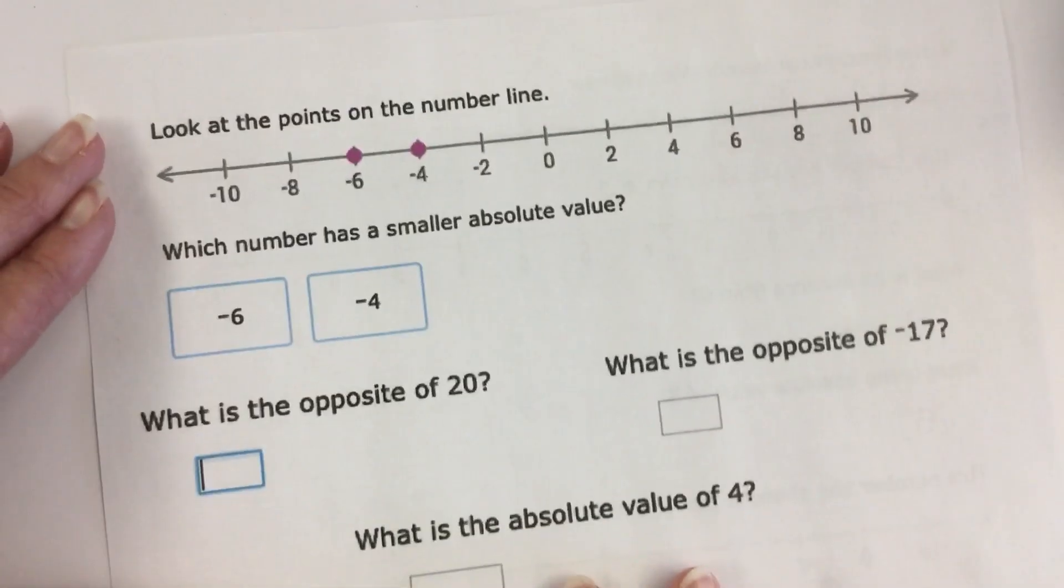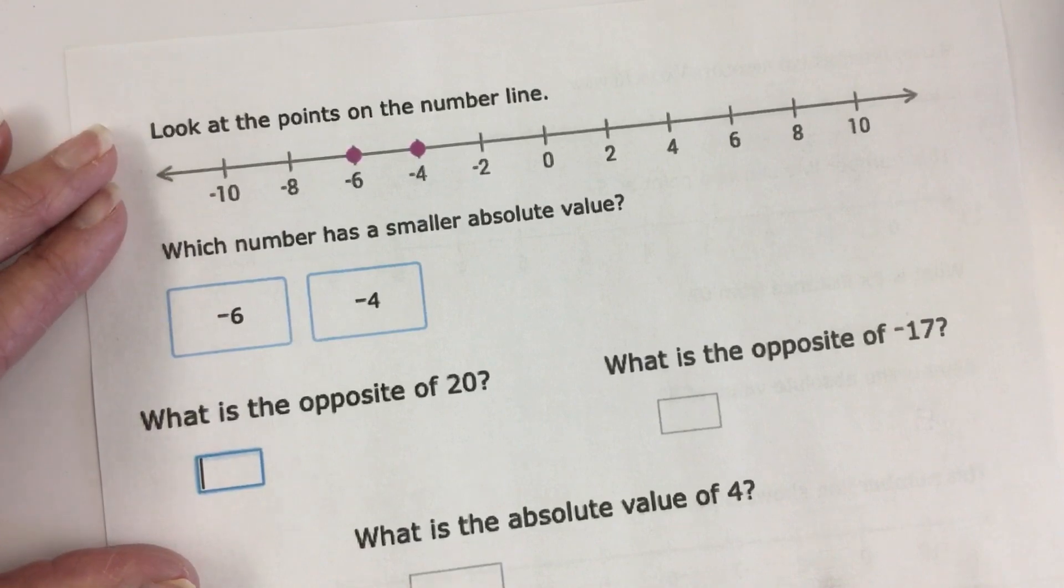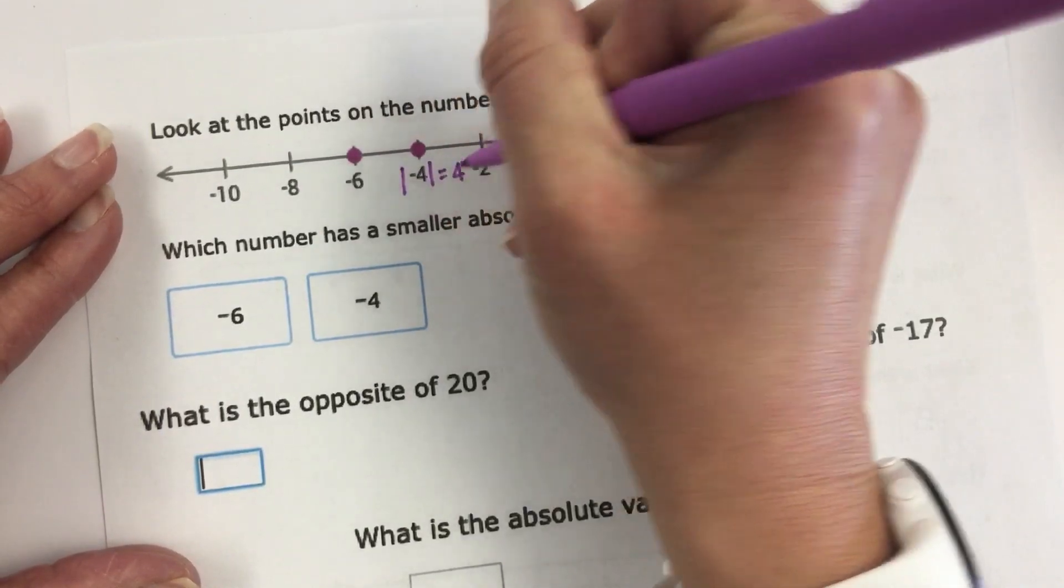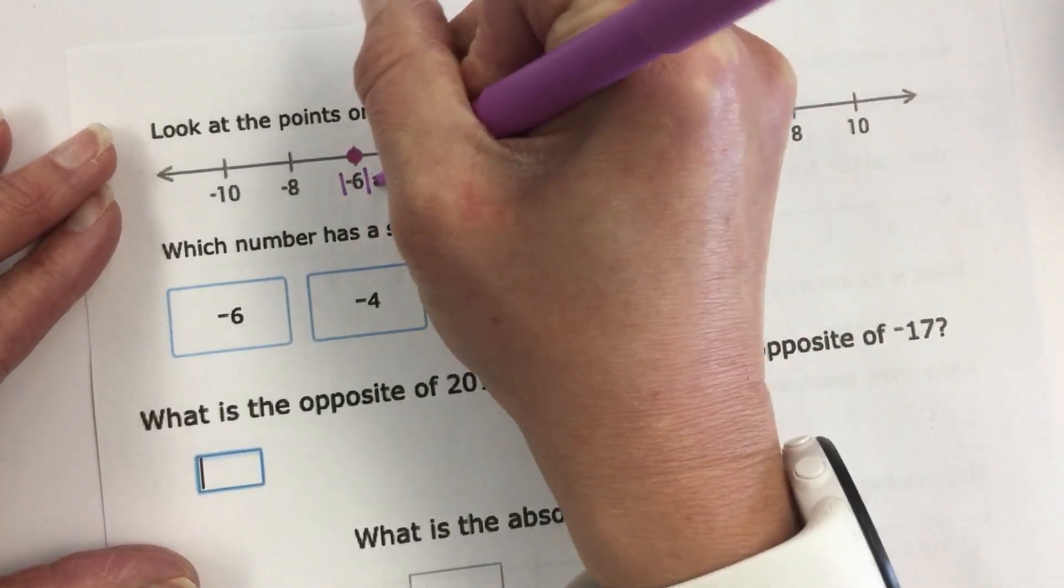On the back of your notes I gave a negative example. So it says which number has the smaller absolute value? Well the absolute value of 4 is 4, the absolute value of 6 is 6.